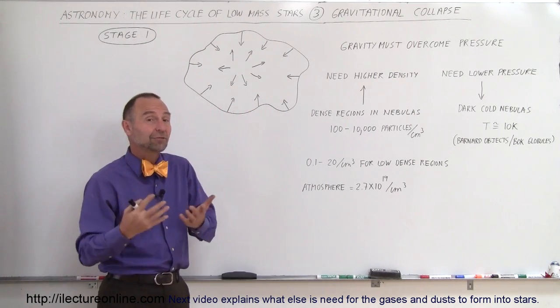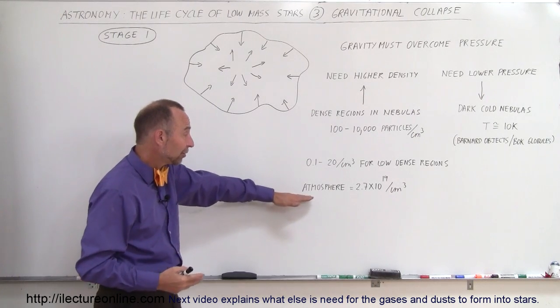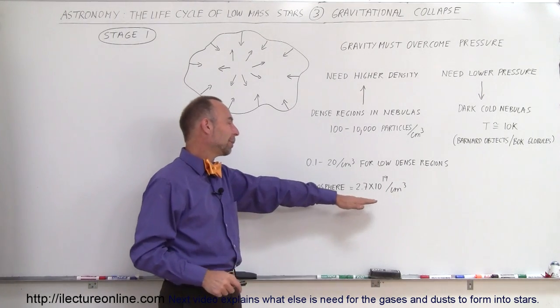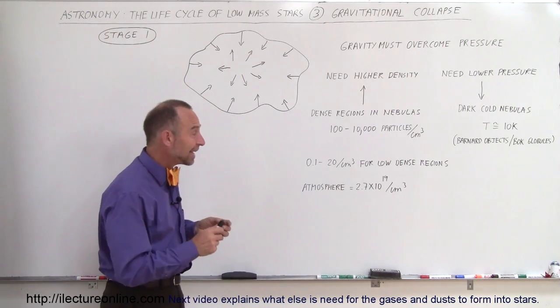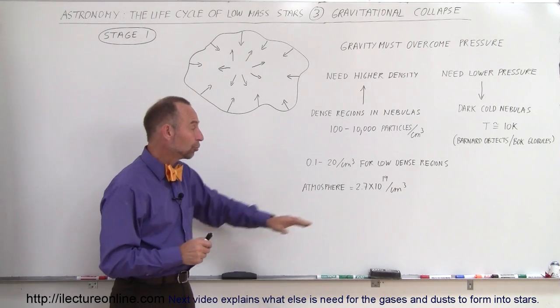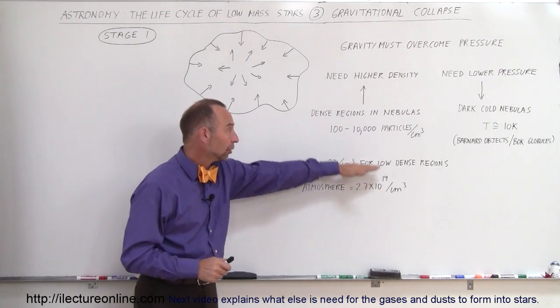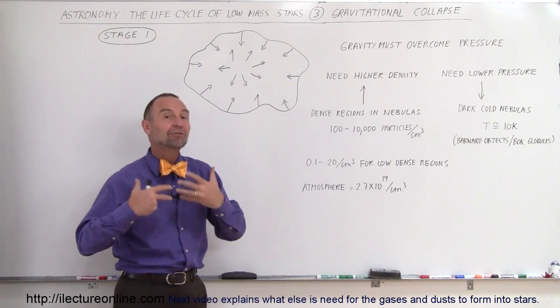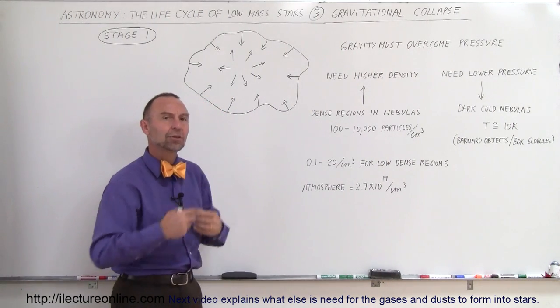People would think our atmosphere is not very dense, but yet our atmosphere has 2.7 times 10 to 19 gas molecules per cubic centimeter. Compare that to the density necessary to begin forming a nebula that could collapse into a star.